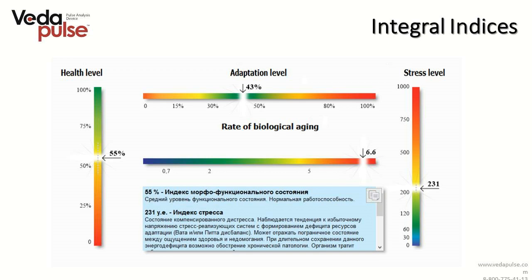Integral indices: stress index is in the range of 200 to 500. Index of morpho-functional state is in the range of 50 to 75, with a tendency to shift to the lower border of norm. Adaptation price has a tendency to shift above 50%, telling us that resources are mainly spent on usual life processes. The speed of biological aging is increased and there is a greater degree of wear and tear of the physical body.